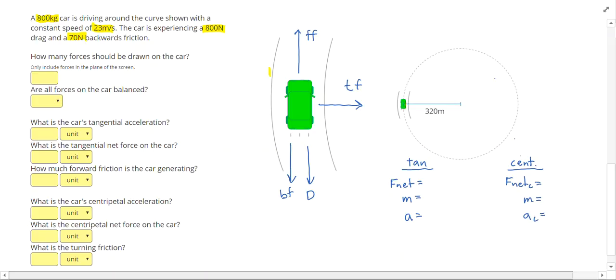800 kilograms is my mass, which applies to both the turning and the changing speed. I can write the 800 newtons of drag, backwards friction of 70 newtons. And there's one more given over here, 320 newtons is my radius of curvature, which will affect the centripetal acceleration. So my radius underneath AC, I should write v and r. And my radius is 320 meters. And I have this constant speed of 23 meters per second is my velocity.